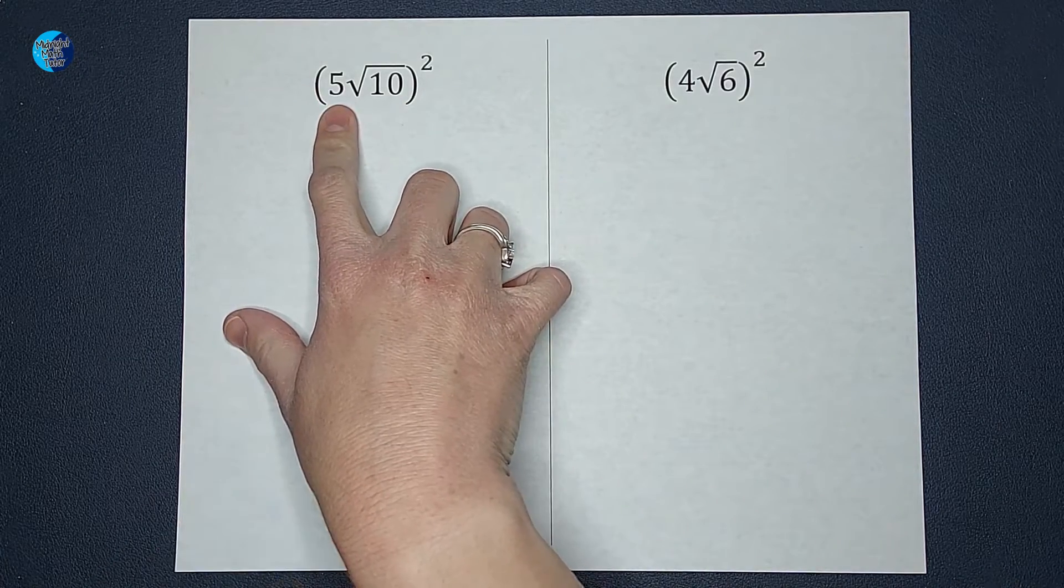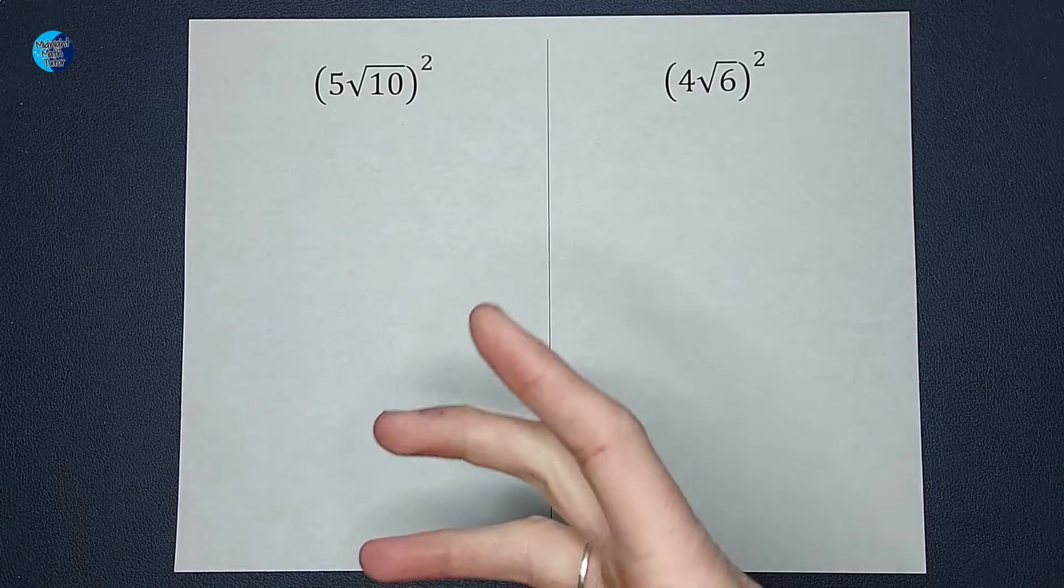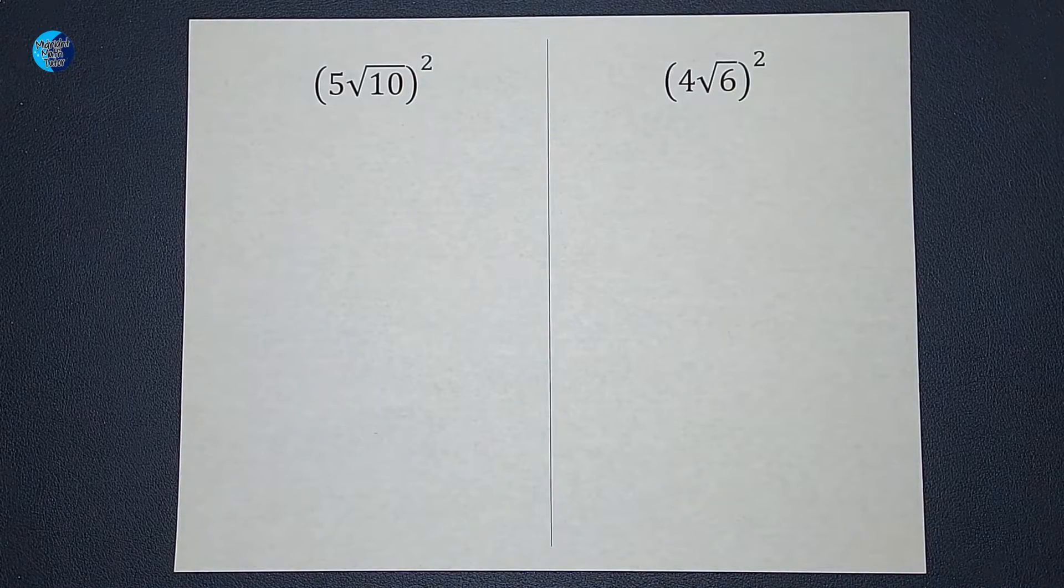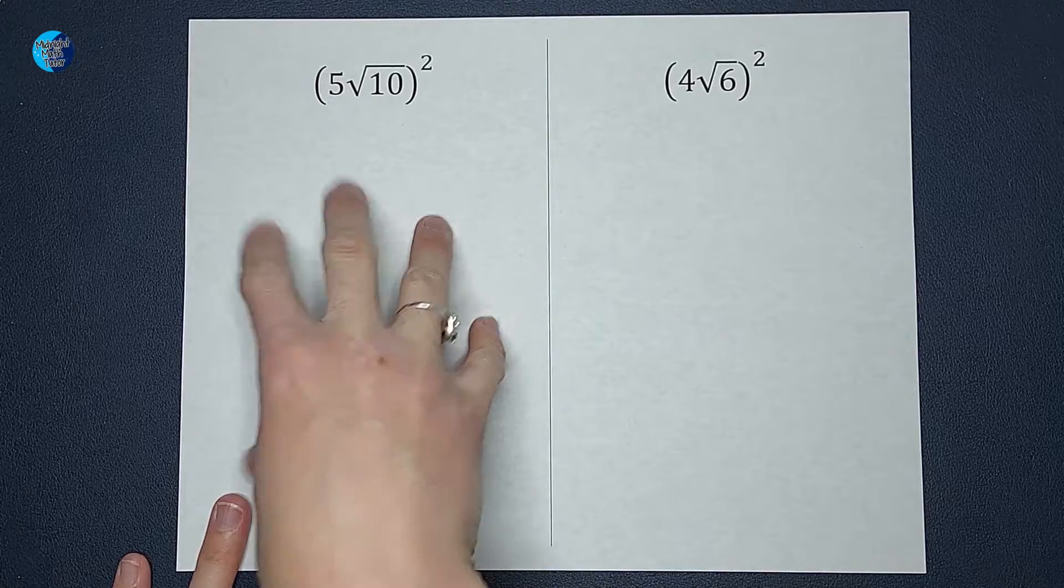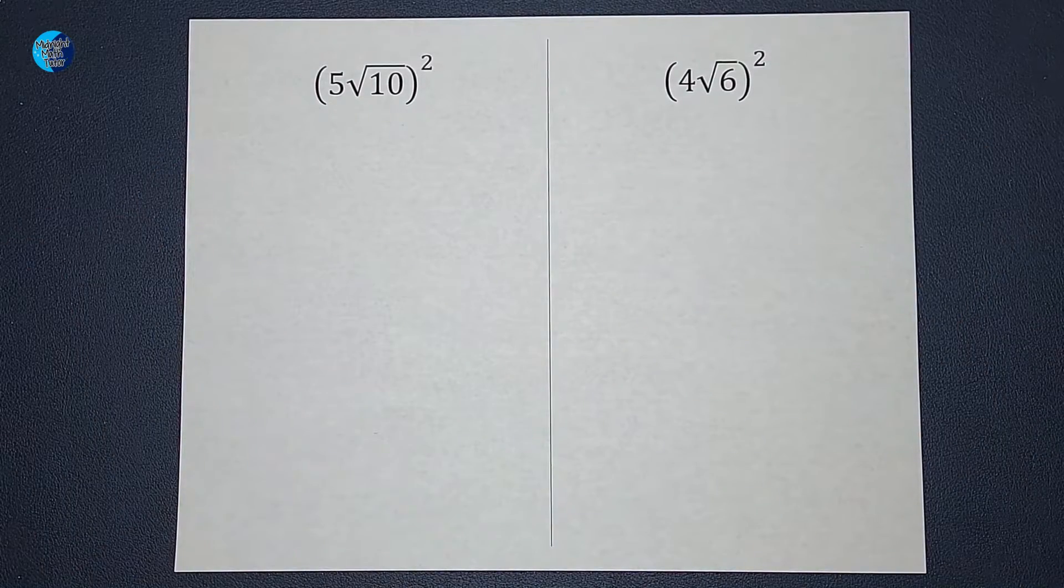But then what happens when you have a number out front that is also being squared? How do we figure that out? Well, that's what we're going to show. I'm going to show you two different ways you can think of this problem.